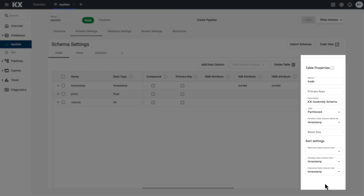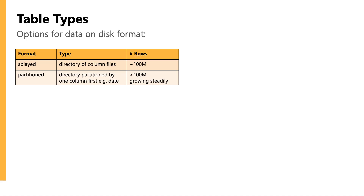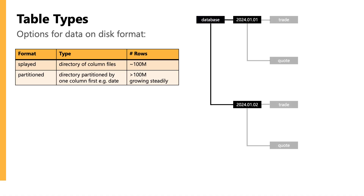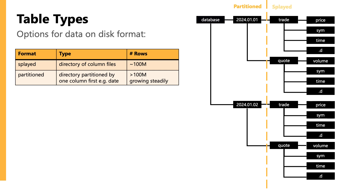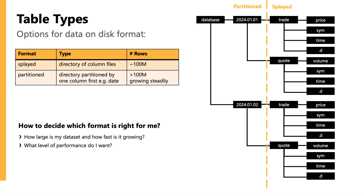The first thing is the table level settings, starting with table type, which has two options: partitioned and splayed. Partition tables are used for large time series data sets and will be the most common type and the best for large volume, high frequency data. Splayed is slightly less common, and should be used for medium sized tables that are not growing that much — something like reference data or non time series data that is relatively static. When determining which to choose, think about the size of your data and how fast it's going to be growing.